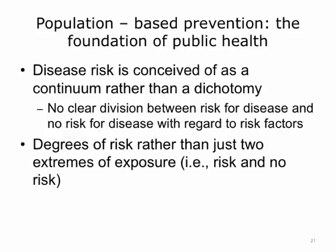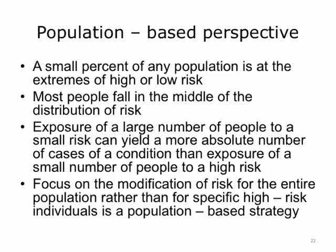Any population model of prevention recognizes that there are degrees of risk rather than just extreme risk and no risk. Second, when you stratify a population along the continuum, what forms is a bell curve. The majority of the population will fall in the middle. With a large enough population, only a small number will fall at the tail ends of the bell curve — the extremes from low to high or high to low risk.